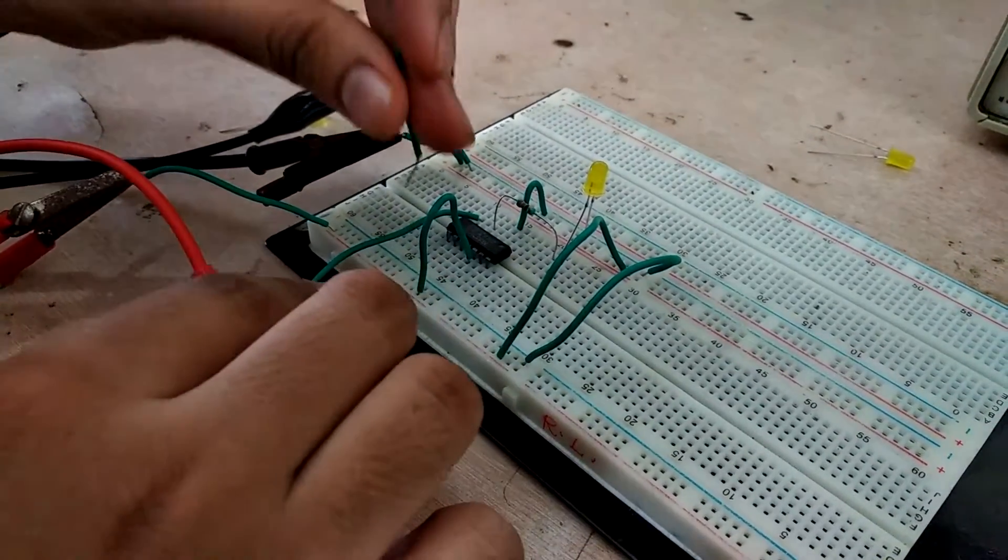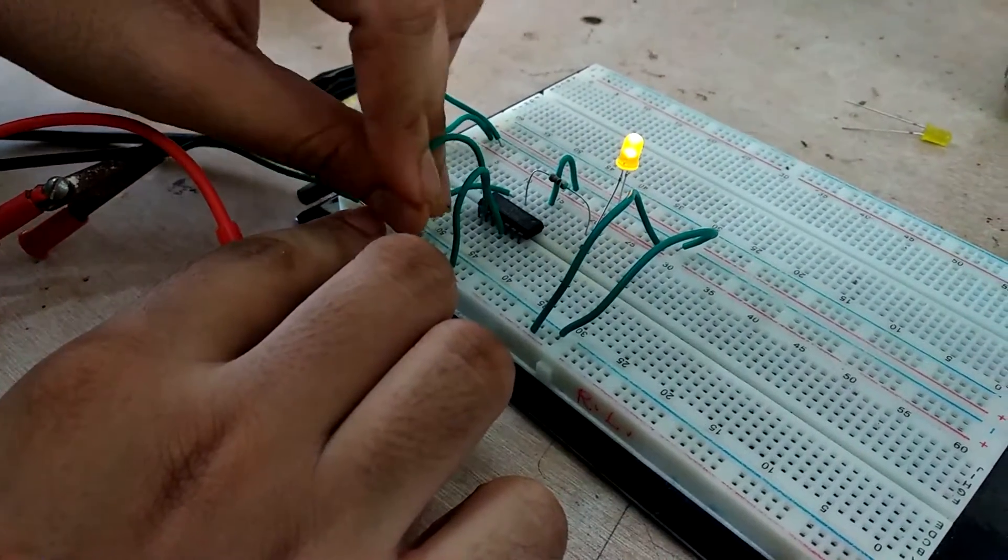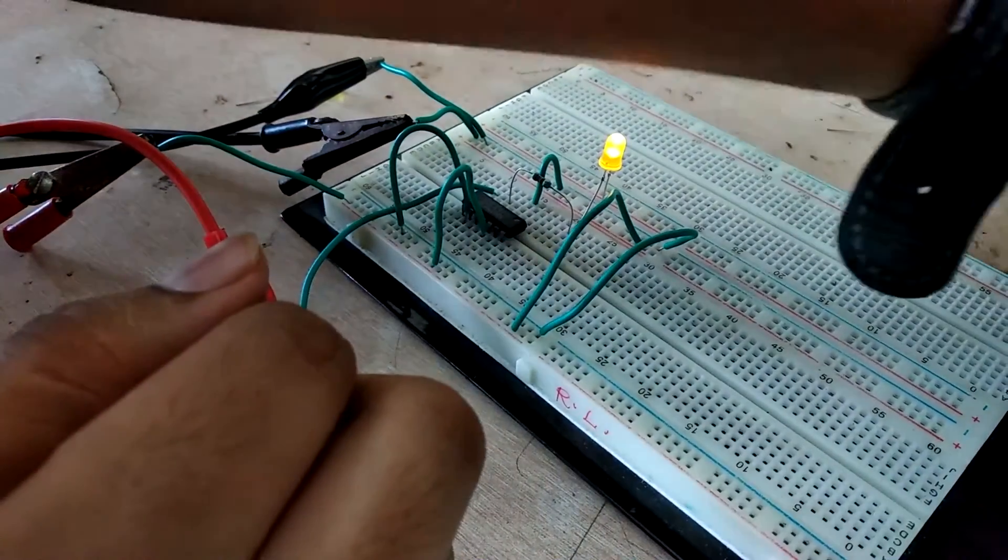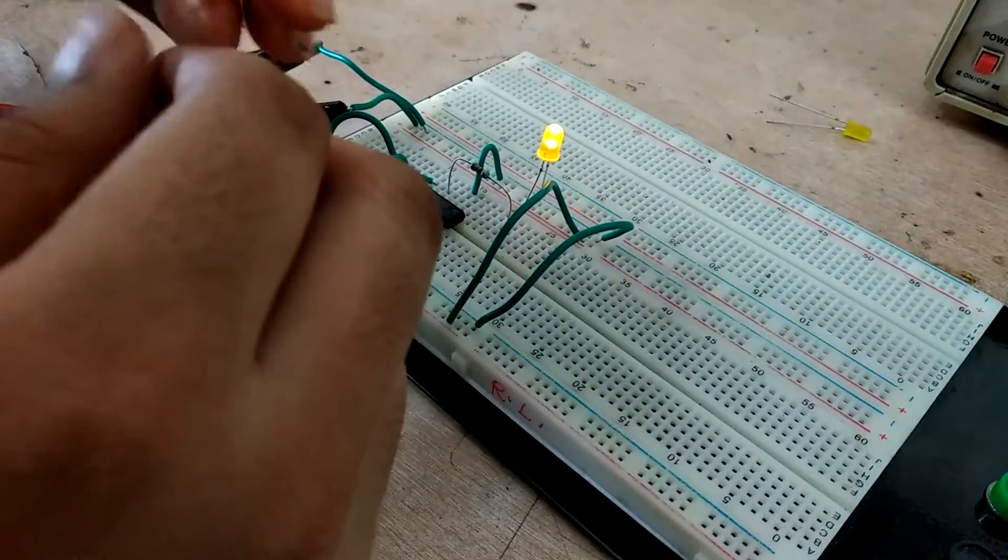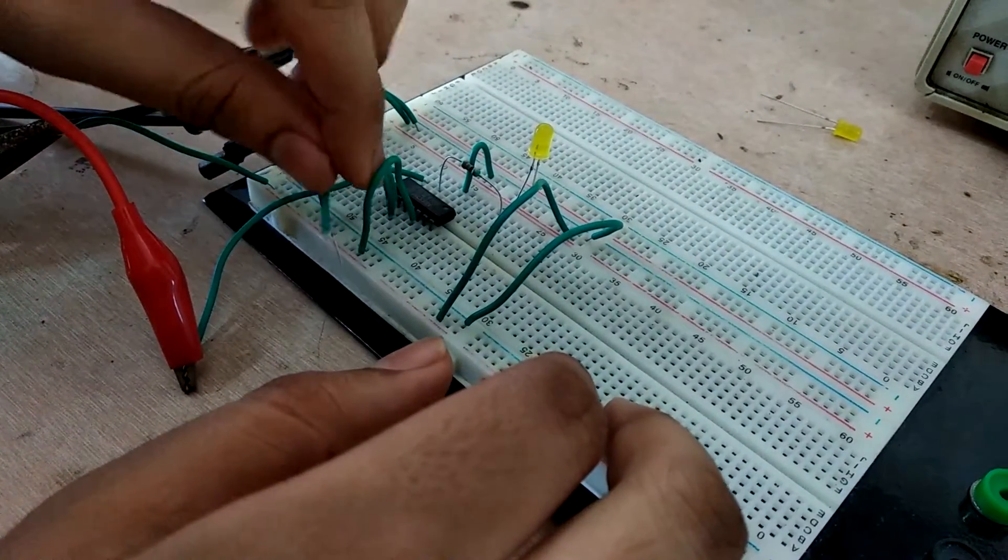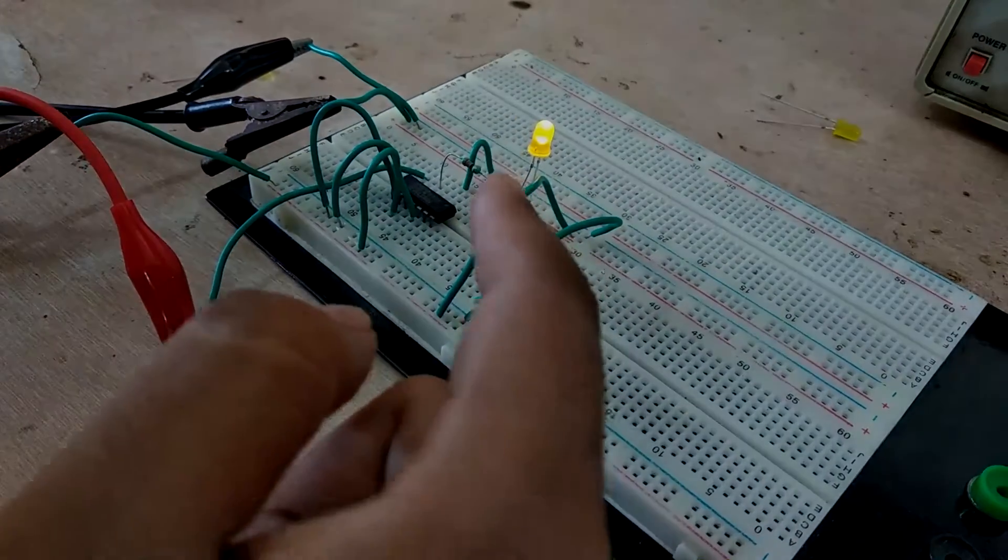And connect pin 2 and 3 to ground. This is the output of mod 2 counter.